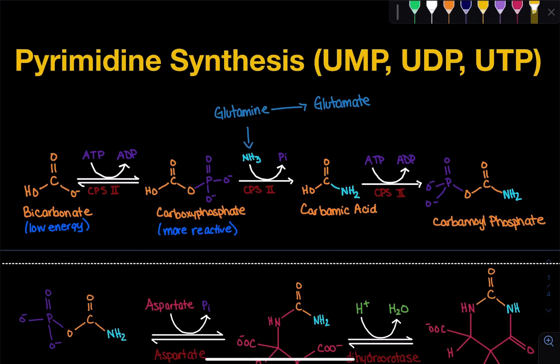When we talk about pyrimidine synthesis, there are two different pathways we can utilize to synthesize pyrimidines. There's the salvage pathway, and there is the de novo pathway. Here we are focusing on the de novo pathway.